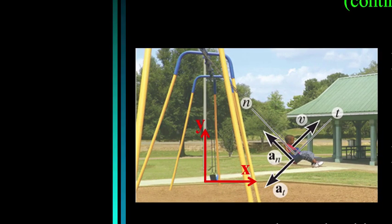Here's another application. A boy in a swing swings upward with some velocity v. We can analyze his motions using n and t coordinates — that's normal and tangential coordinates. As he goes up, the magnitude of his velocity is changing and the acceleration as well. How can we determine the velocity and acceleration at the bottom of the arc? That would probably be difficult using x, y coordinates since the boy's angle is changing with respect to x and y as a function of time. So normal and tangential coordinates lend themselves very well to problems like this.